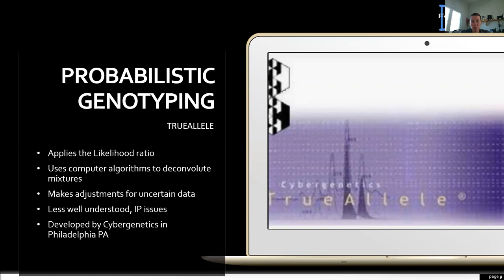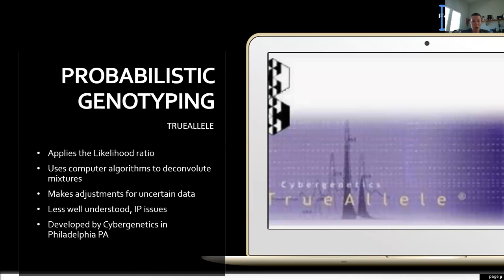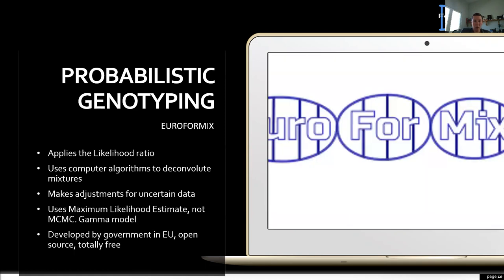Another program that does something similar is TrueAllele, developed by Cyber Genetics Corporation, a company from Pennsylvania in the U.S. It also uses computer algorithms to deconvolute DNA profiles and makes adjustments for uncertain data. It differs from STRmix in that it was developed by a private company rather than a government agency, and there are some privacy issues associated with some of its algorithms. However, the developers have made many training videos and materials freely available on YouTube and the internet.